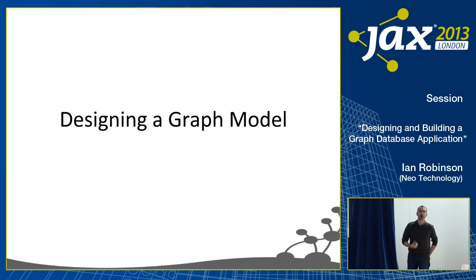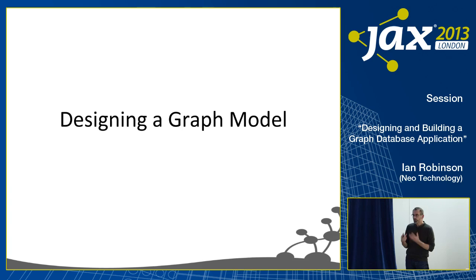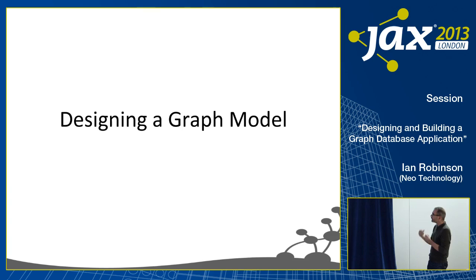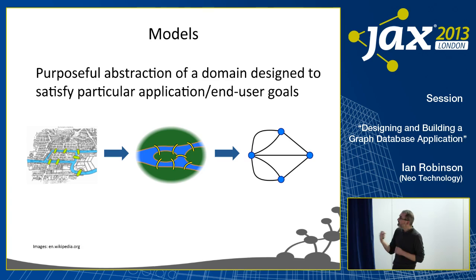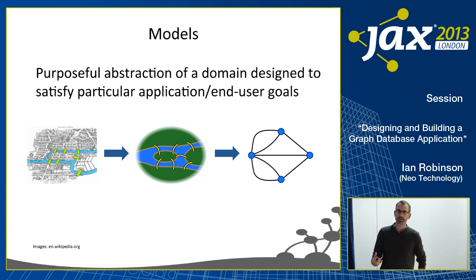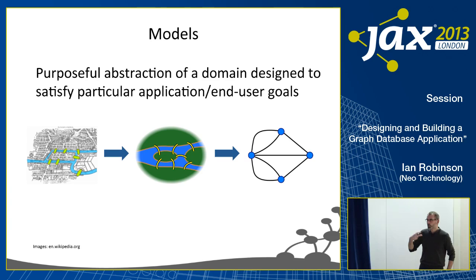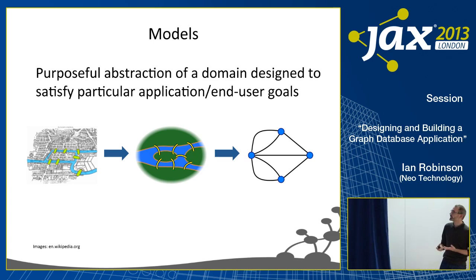Assuming you're choosing to use a graph database to back your application, how do you go about designing the graph model and, just as importantly, designing the queries you'll run against it? You want to get the data in but also get the data out. When we're creating a data model, we're not trying to create a transparent window onto reality — we're actually creating a purposeful abstraction of our domain, motivated by particular end user application goals. We're trying to solve a particular problem or set of problems, and therefore create a model that abstracts out the most important elements and presents them in a way that helps satisfy those questions.